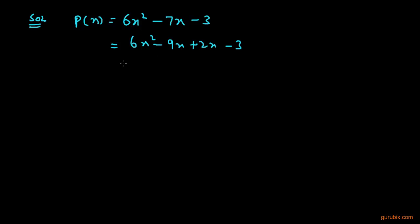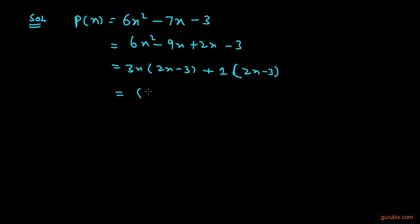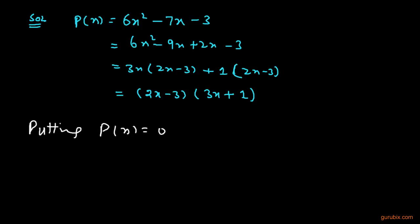We take 3x common from the first two terms, giving us (2x minus 3). Then we take 1 common from the remaining terms, also giving us (2x minus 3). So the factored form is (3x plus 1)(2x minus 3).